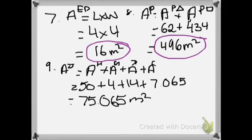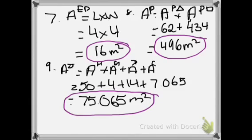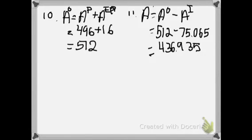Now we're going to add the area of the house, the garage, the driveway, and the circular fountain. The area of the house was 50 meters squared, the garage was 4 meters squared, the driveway was 14 meters squared, and the circular fountain was 7.065 meters squared, giving us 75.065 meters squared. For step 10, we add the area of the property (496) and the extra patio (16 meters squared) to get 512 meters squared.